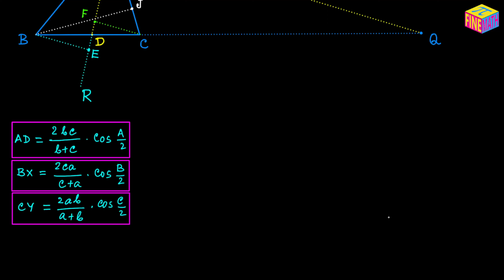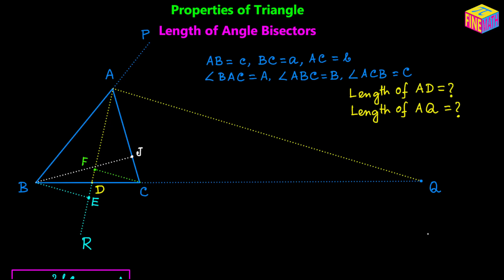Next we are going to see how to calculate the length of the exterior angle bisector AQ. If we consider the big triangle ABQ and subtract the area of triangle ACQ from it, that gives us the area of triangle ABC. So: area(ABQ) − area(ACQ) = area(ABC). To calculate the areas of ABQ and ACQ we will use AQ as the base.